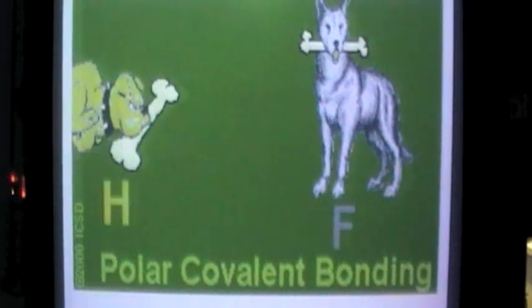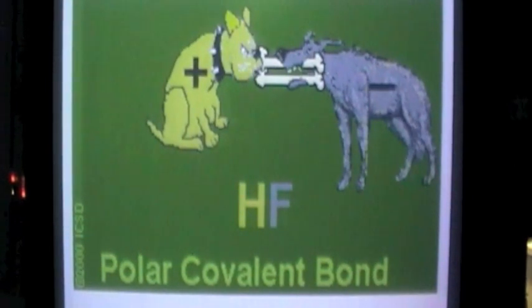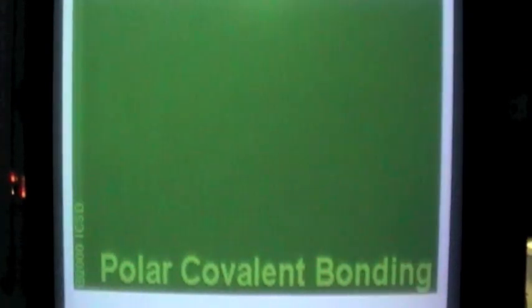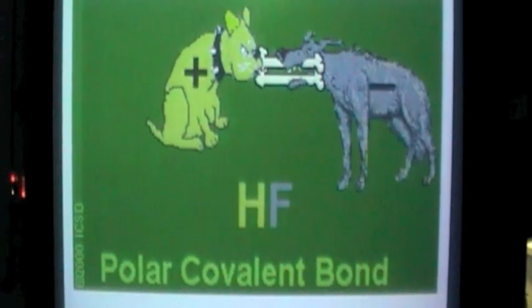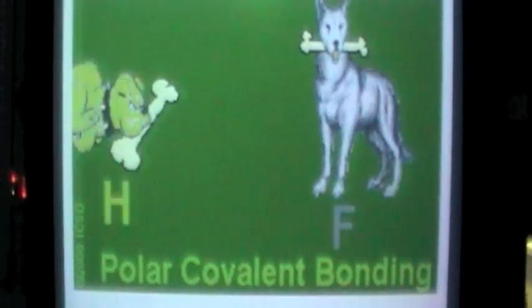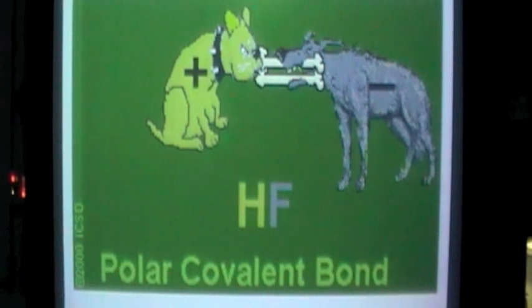And then the last one is polar covalent bonding. I'll just play that through a couple of times. So the grey dog is more electronegative than the yellow dog but there's not a massive difference, so they're still both got hold of the electrons, the bones, but the grey dog is kind of winning if you like.